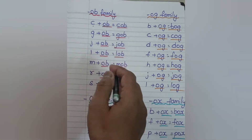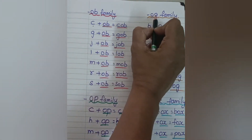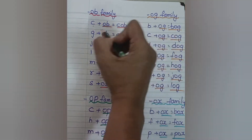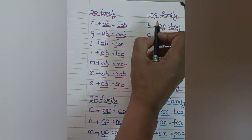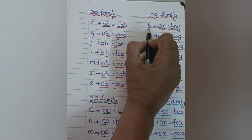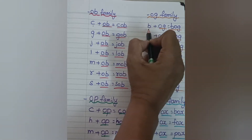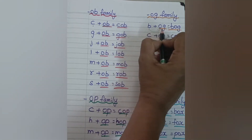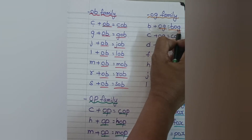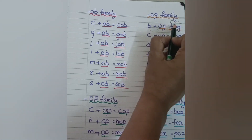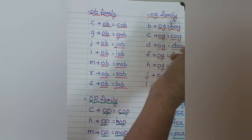Let us move to the next family — OG family. Same way we are reading here: first with letter sound, and next we are blending this to the two-letter word, which makes three-letter words. This is nothing but CVC — consonant, vowel, consonant.